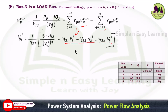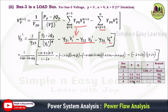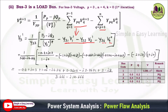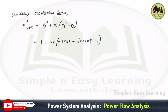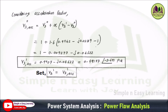Substituting bus 3 data — real power 0.4, reactive power 0.3 — as −0.4−j0.3 (which becomes positive due to the minus in the formula). Substitute all values and simplify using complex mode in the calculator to get V3¹. Then apply the acceleration factor formula, substitute values, and obtain the accelerated voltage. Finally, set V3¹ equal to V3_acc¹.